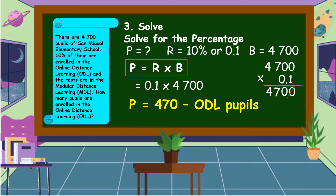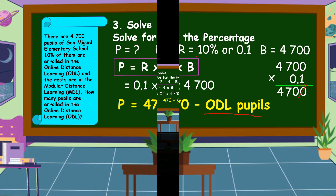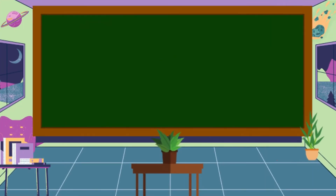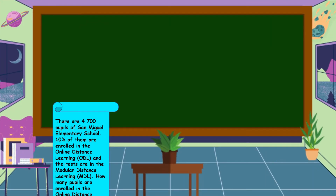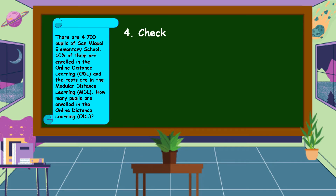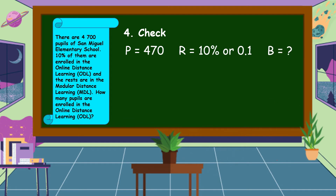470 is the number of ODL pupils. The last step is we're going to look back or check to know if our answer is correct or not. We're going to solve for the base, which we know should be 4,700. The formula is: base is equal to percentage divided by rate. Let's substitute the value of percentage and rate into our formula.